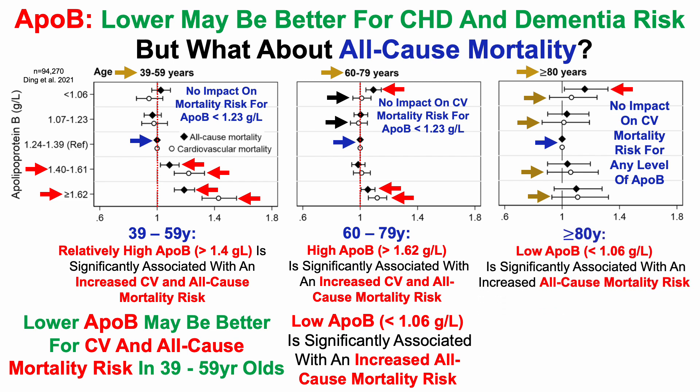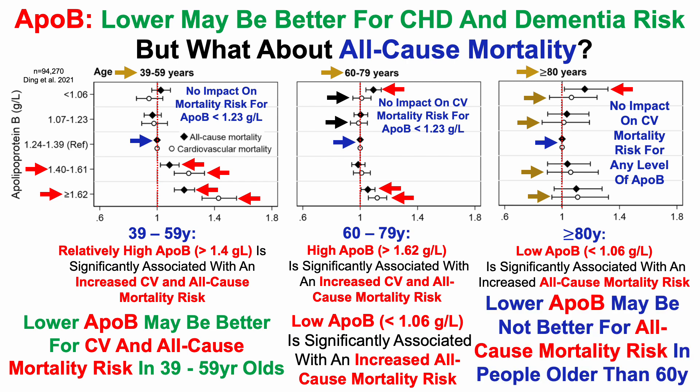Again, notice that at the lowest level of APO-B — less than 1.06 grams per liter — all-cause mortality risk was significantly increased in association with relatively low APO-B. So collectively, the data in people older than 60 years shows that relatively lower APO-B may not be better for all-cause mortality risk in that age group.